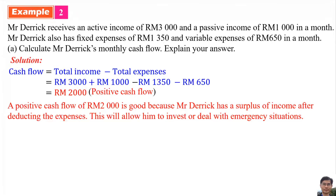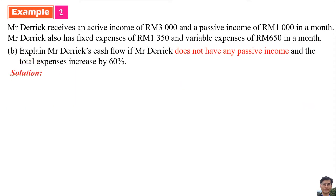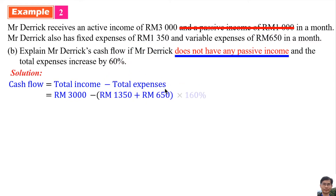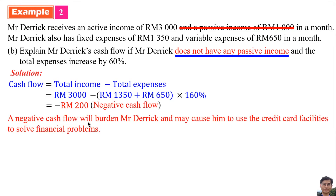If Mr. Derrick does not have any passive income and total expenses increase by 60%, the total income is only 3,000 ringgit. The total expenses become 1,350 ringgit plus 650 ringgit multiplied by 1.60, giving higher expenses. The cash flow becomes negative 200 ringgit, which is a negative cash flow. A negative cash flow will burden Mr. Derrick and may cause him to use credit card facilities to solve financial problems.